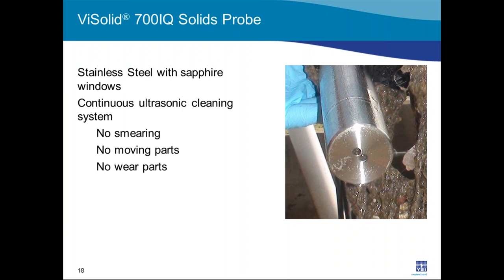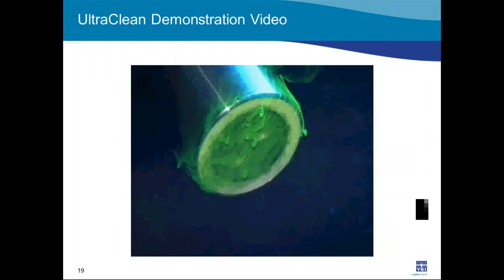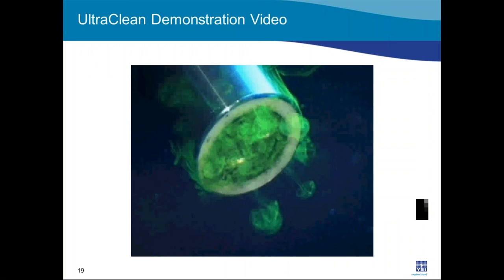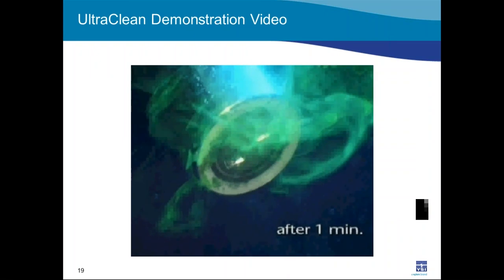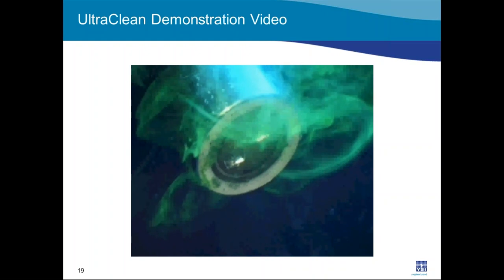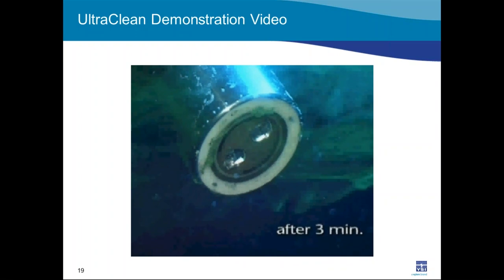The ultra clean technology has no moving parts, no risk of smearing, and no wear components to replace — unlike wipers, which require wiper and seal replacement and may need factory servicing. A produced video shows ultra clean technology on the Visoturb turbidity probe dispersing fouling within one minute and clearing it completely within three minutes.